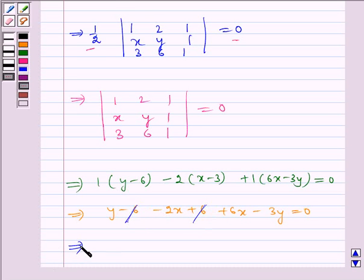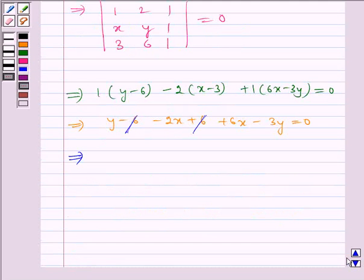So we are left with combining the like terms: -2x + 6x gives 4x and y - 3y gives -2y, which equals 0.